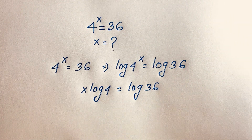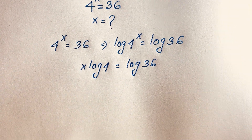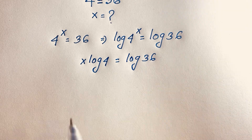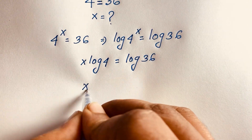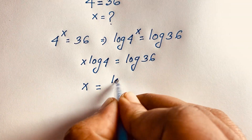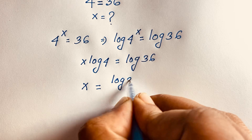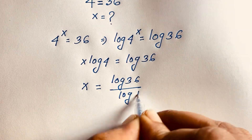Now, if I divide both sides by log 4, we will find out that x is equal to log 36 over log 4.